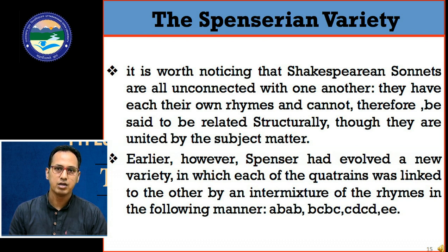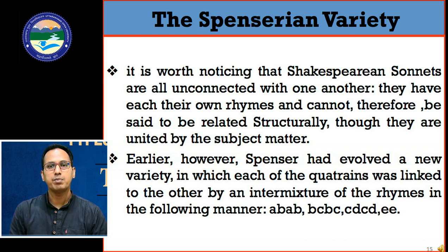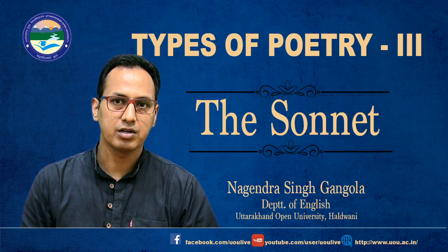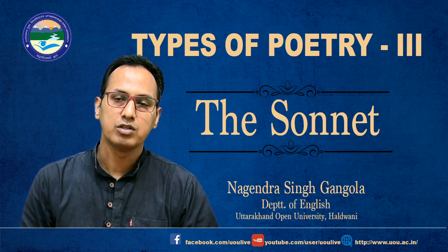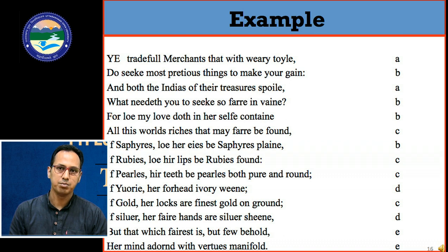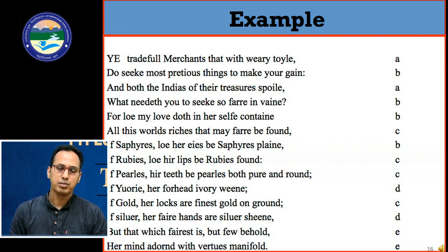In the Spenserian sonnet the next quatrain starts from C, making CDCD, and the last couplet is EE — same as in the Shakespearean form. So the full rhyme scheme is ABAB BCBC CDCD EE. Looking at the example Spenserian sonnet: from ABAB, then it starts with the same B — BCBC — and then starts with the same C — CDCD — and the last couplet remains different. So again 14 lines, but with an intermixed connection of the rhyme scheme where the last rhyme of each quatrain begins the next.